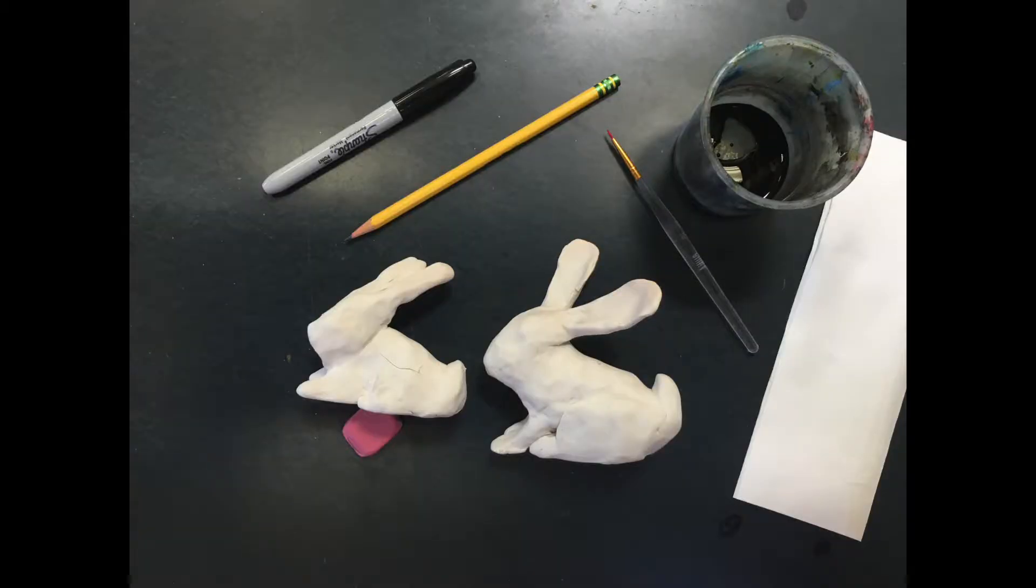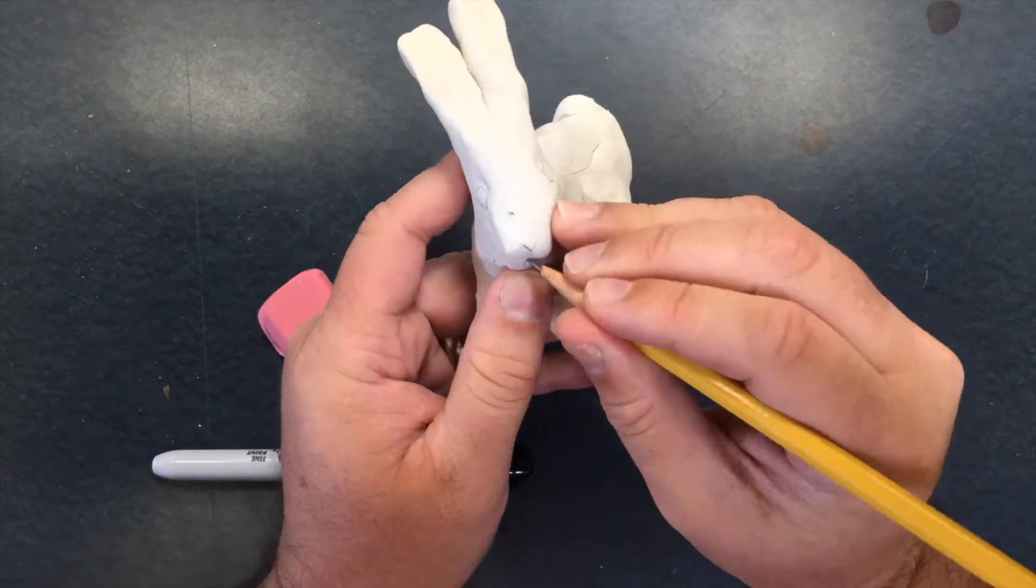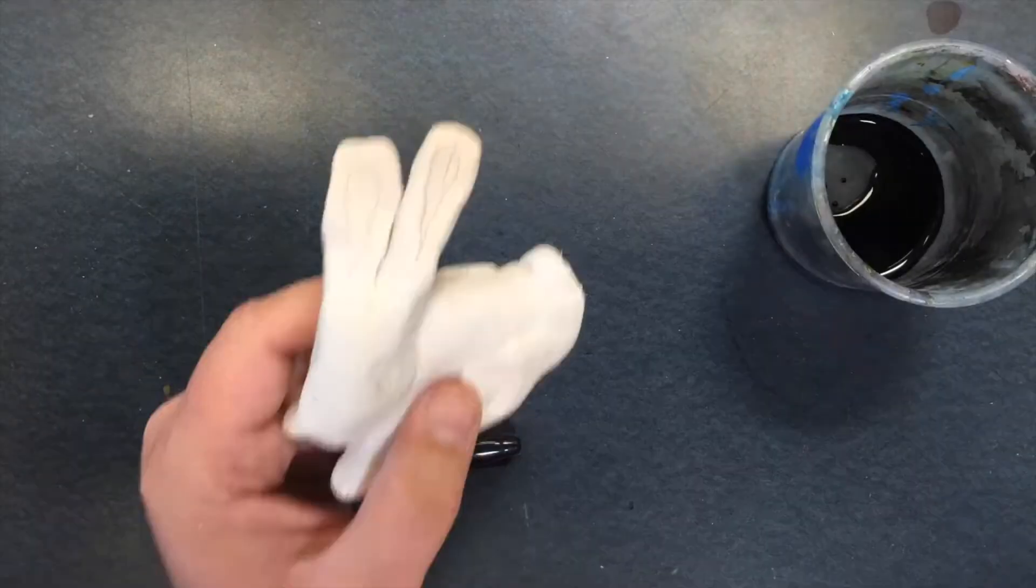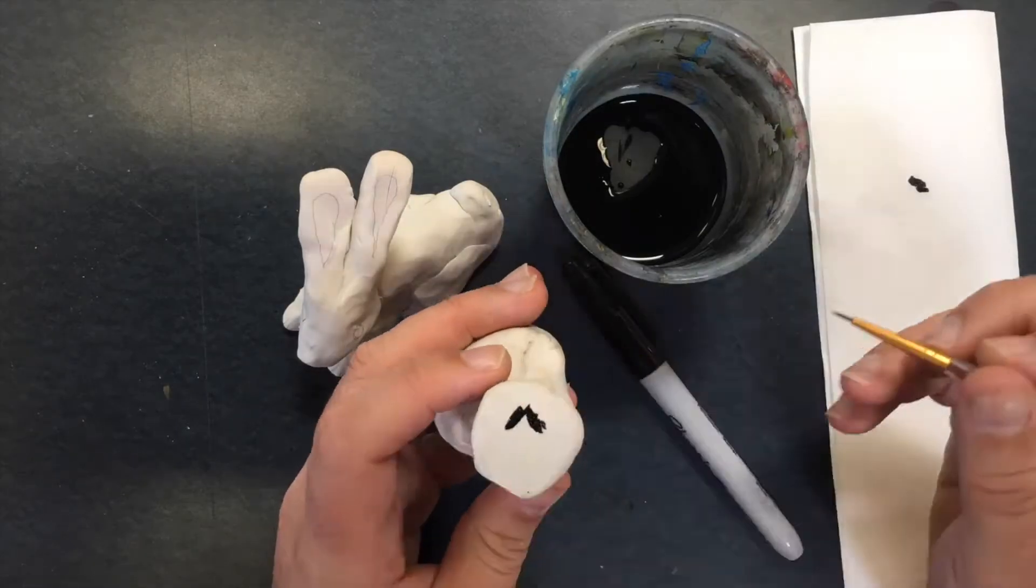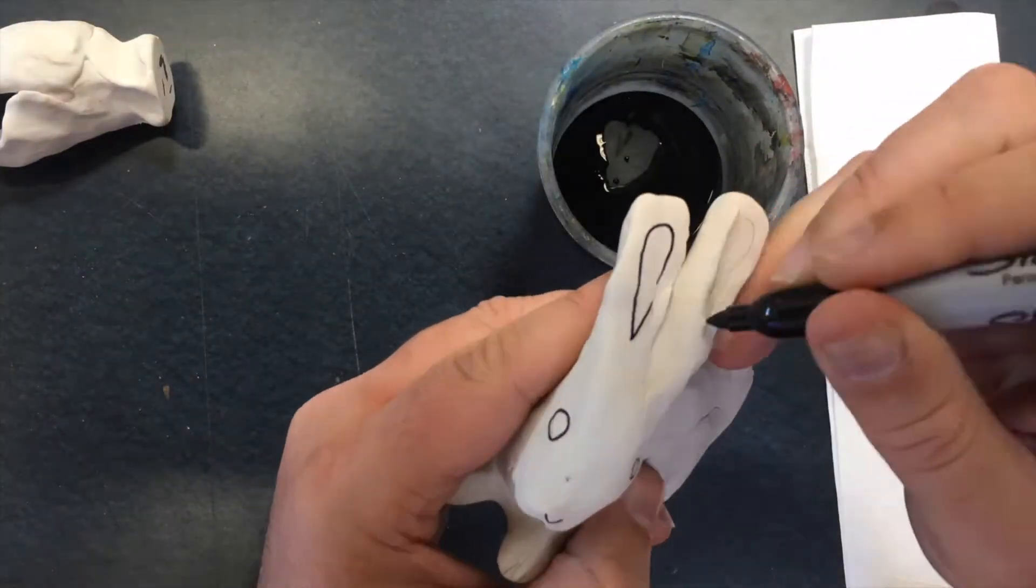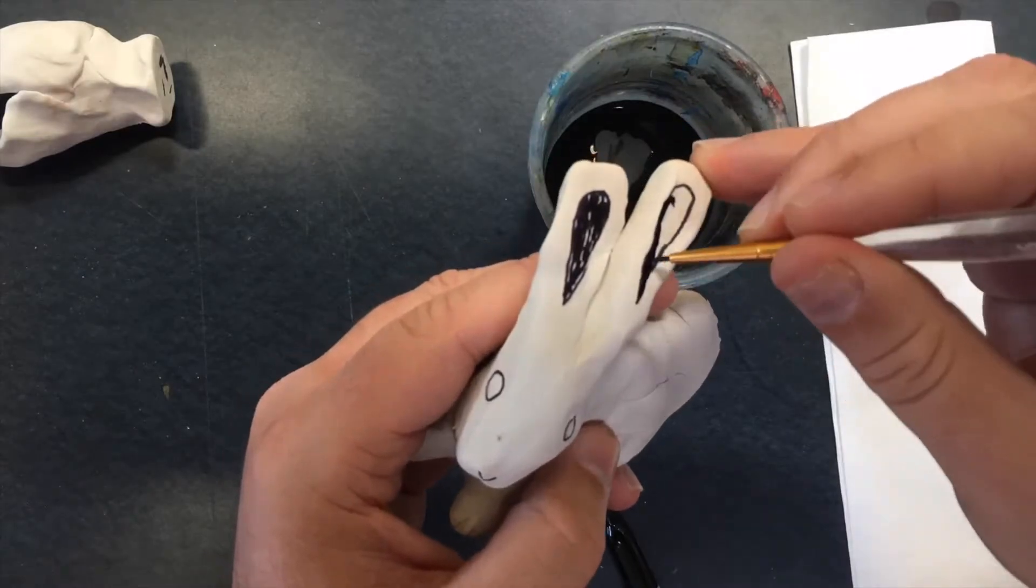Yes, we have to cook your sculptures before we paint them. Believe me, it's really gross to draw onto Sculpey with a Sharpie. When they are cooked though, the way they are here, you can draw or paint right onto your sculpture.